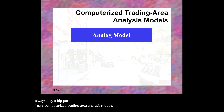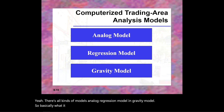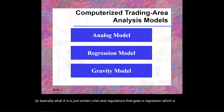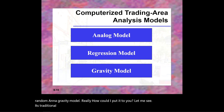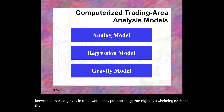There are various models including the analog model, regression model, and gravity model. The gravity model in its traditional form predicts trade flows based on economic size and the distance between two units — essentially, gravity pulls trade together. There is overwhelming evidence that trade tends to fall off with distance.